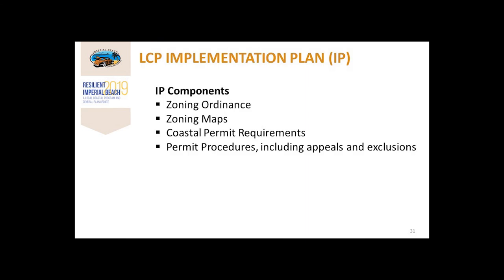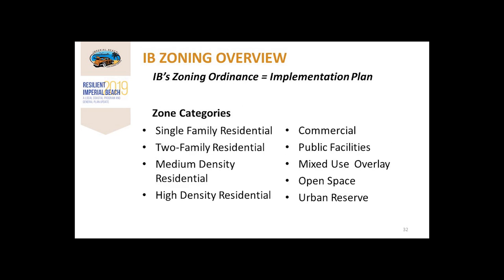The implementation plan is a method of carrying out the local coastal program and general plan. Within the implementation plan, there are various components such as the zoning ordinance, zoning maps, coastal permit requirements, permit procedures including appeals, and any exclusions. With regard to the zoning ordinance, there are different zones with different uses, such as residential, commercial, public facilities, mixed use, open space, and urban reserve.